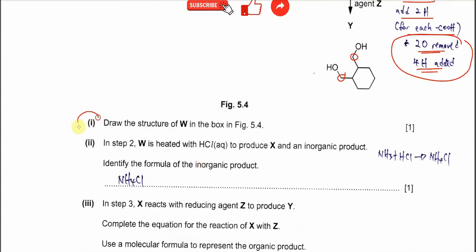Okay. So the part one already done. I told you just now, right, from the nitrile. Now, in step two, when W is heated with HCl to produce X, an inorganic products form, identify the inorganic products.